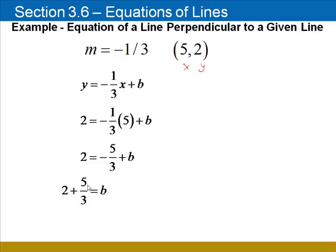To add 2 plus 5 thirds, you want to treat the 2 as if it's 2 over 1. The common denominator is 3. So I'm going to multiply numerator and denominator by 3. That gives me 6 over 3 plus 5 over 3, or 11 thirds. Taking this value back to the original equation, the equation of the line is y equals negative 1 third x plus 11 thirds.